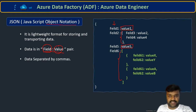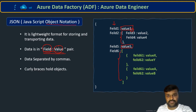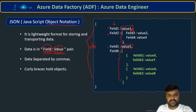Data is separated by commas — between every field-value pair there is a comma separator. The main thing: curly braces hold objects. For example, this whole thing here is one object, and within that object, Field 1, Field 2, Field 5, and Field 6 are all fields at the same level.